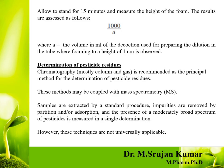After shaking for 15 seconds, allow to stand for 15 minutes and measure the height of the foam. The results are assessed using the formula: foaming index = 1000 / a, where 'a' is the volume in ml of the decoction used for preparing the dilution in the tube where foaming to a height of one centimeter is observed. You observe each test tube to identify which tube attained a foaming height of one centimeter, and the volume of decoction added to that tube gives the foaming index determination.